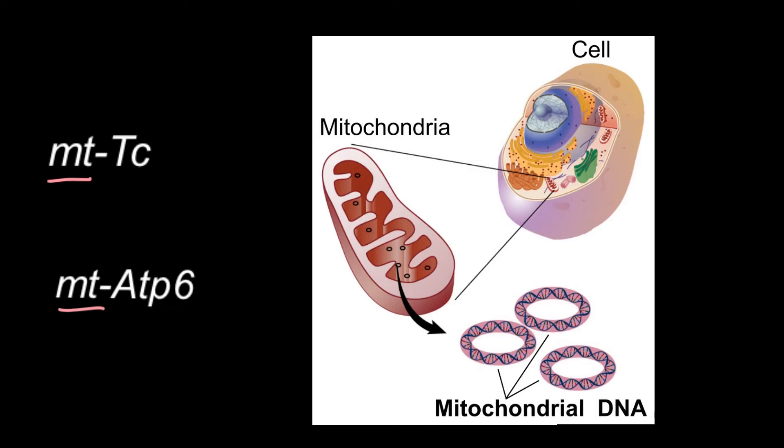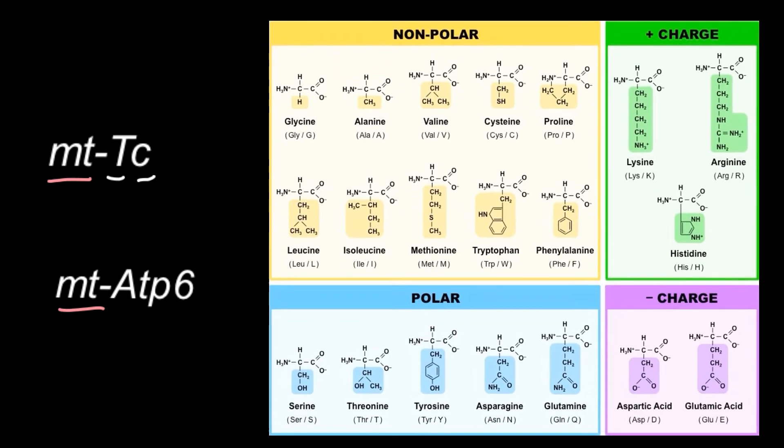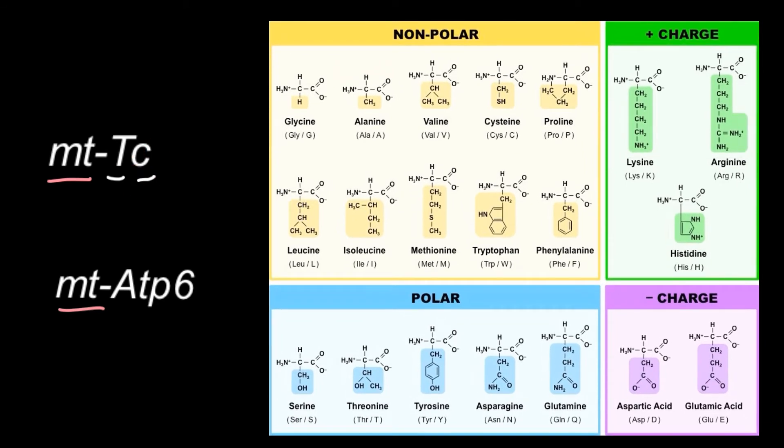22 of them would code for transfer RNA. And by the way, this T here stands for transfer RNA. The next letter stands for the type of amino acid that this transfer RNA would be charged with. For example, this C would stand, as you see there are three variants of the name: full name, three letter name, and one letter name. This C would stand for cysteine. This is the one letter name for this amino acid. So now, as you see, this is not an enigma anymore for you.